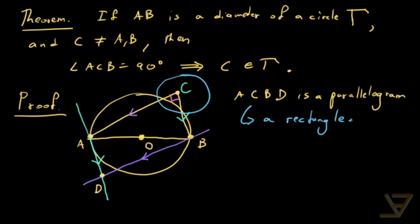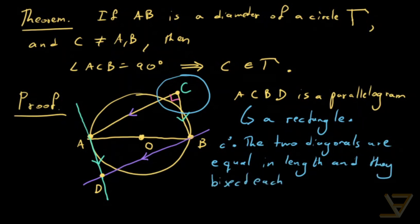Now we're going to invoke a property of rectangles which is that the two diagonals are equal in length and they bisect each other.